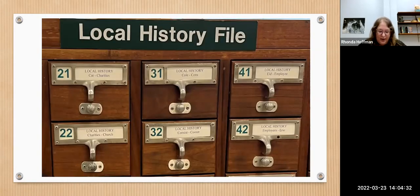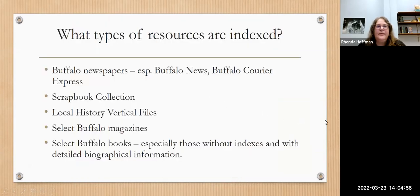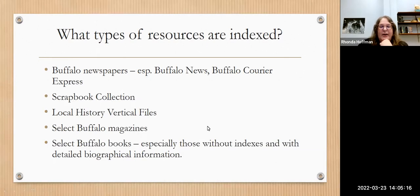You want to look for your topic alphabetically to find the correct drawer. You can see the alphabetic ranges, and each drawer contains hundreds of index cards which serve as an index to local publications. The types of resources indexed are Buffalo newspapers — especially the Buffalo News and the Buffalo Courier Express — the library's scrapbook collection, the local history vertical files, select Buffalo magazines, and select Buffalo books, especially those without indexes and with detailed biographical information.